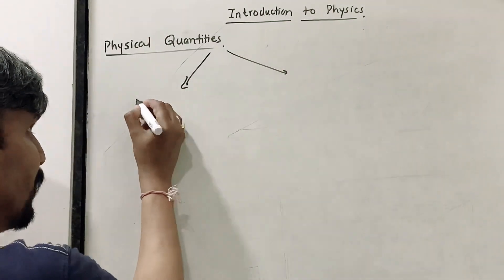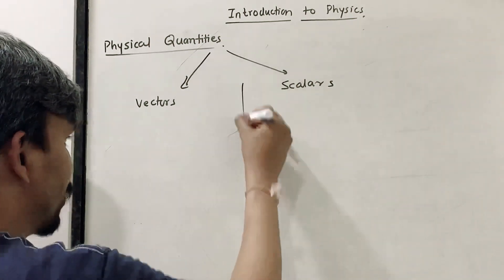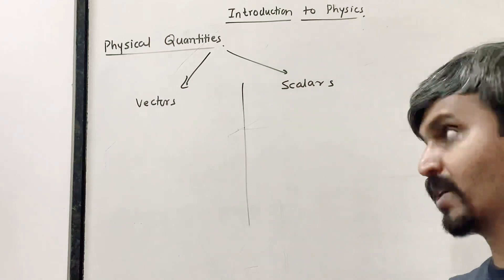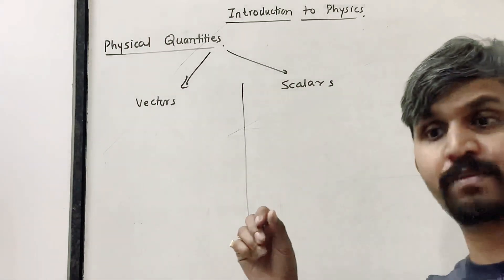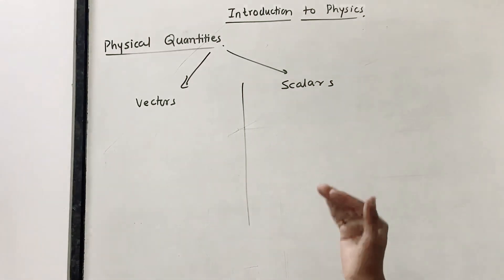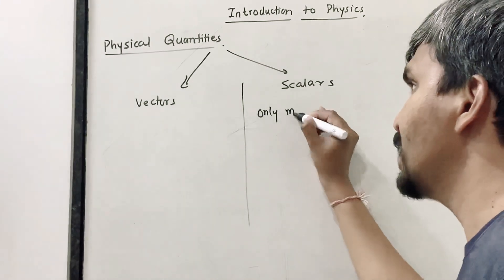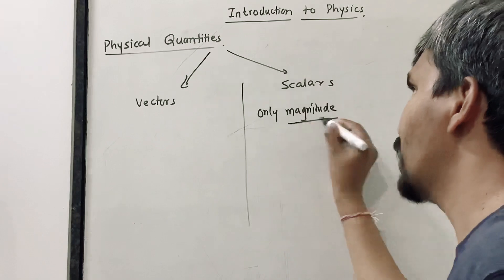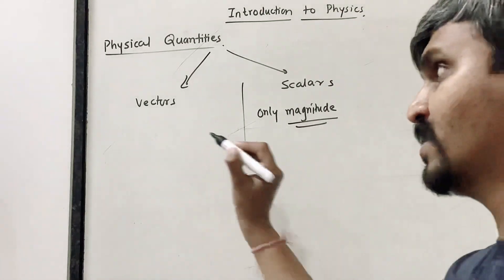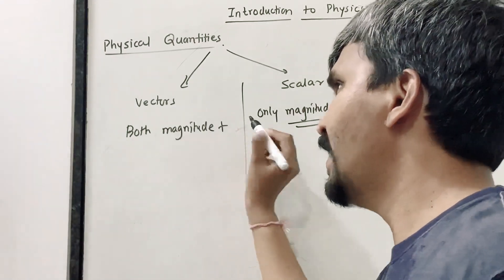Physical quantities are divided into two parts: vectors and scalars. Scalar quantities are those which can be completely expressed by their magnitude only. Vector quantities require both magnitude and direction. Magnitude is a numerical value — for example, force is 10 Newton; the '10 Newton' is the magnitude. But vectors require both magnitude and direction.